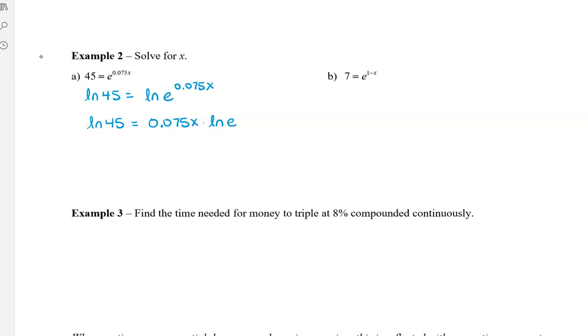And this is times the natural log of e. So remember that the natural log of e, this part here, is all equal to 1. So to find x, we're going to divide both sides by 0.075. So we get ln 45 divided by 0.075. Now you can take your calculator out and x is equal to 50.755.